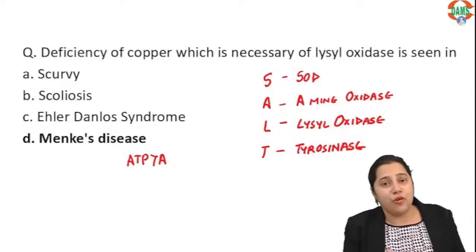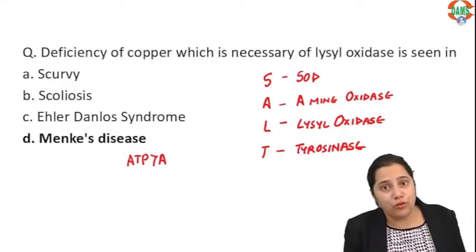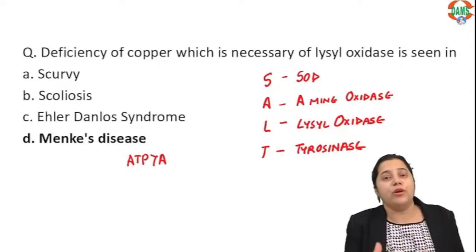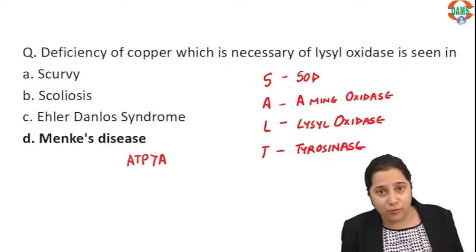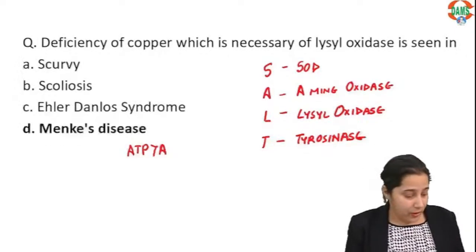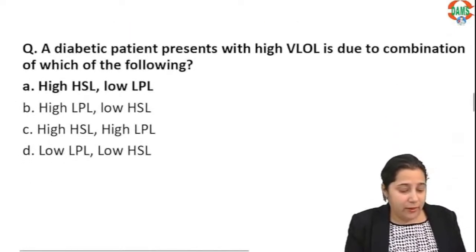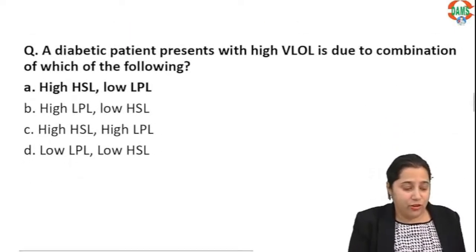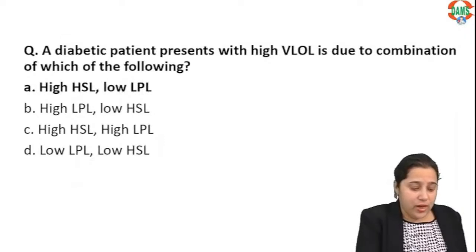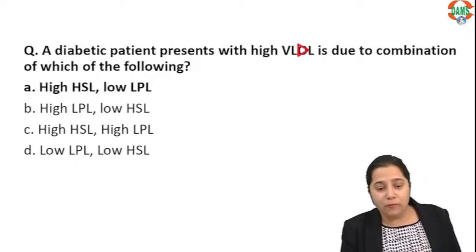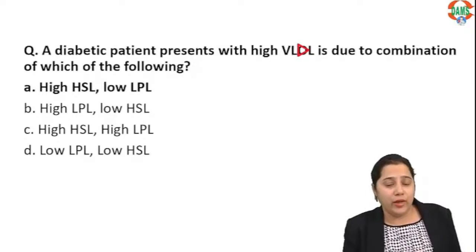Lysyl oxidase is required for cross-linkages in collagen, and that requires copper. Deficiency of copper can also result in poor collagen formation.